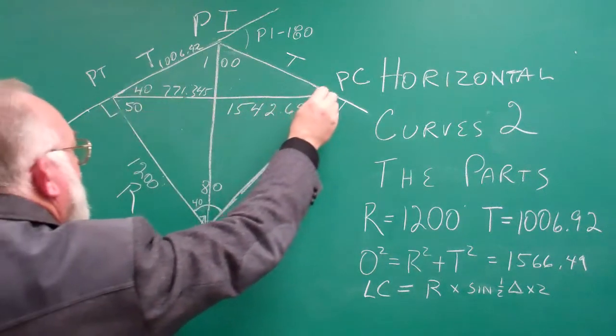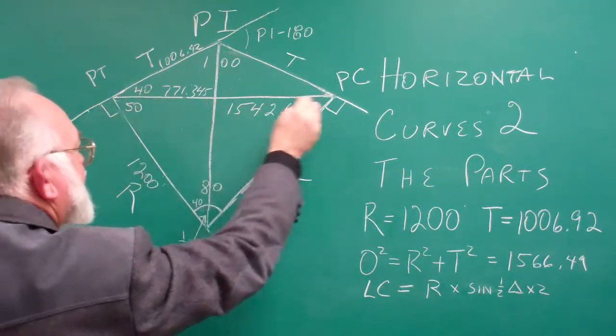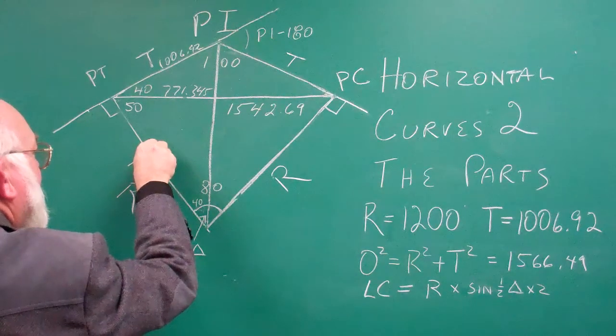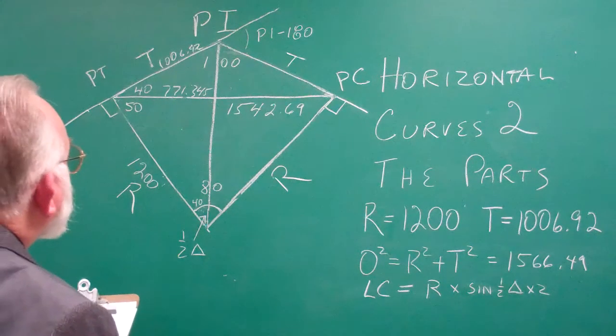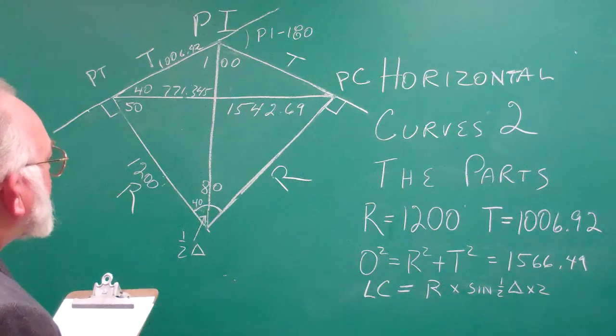Now you've got this isosceles triangle solved because this side is equal to that side.